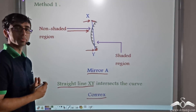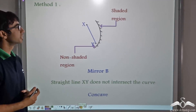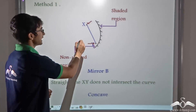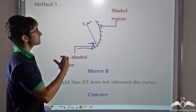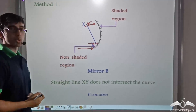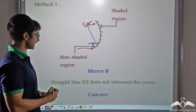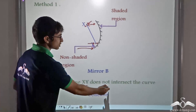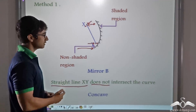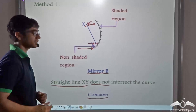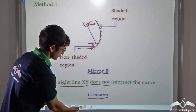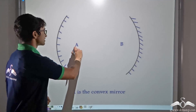Now let us try out the same thing for mirror B. Again in mirror B, we consider two points X and Y on the reflecting side of the mirror — the non-shaded region — taken very close to the mirror. After we join point X with point Y, we find that we get a straight line XY that does not intersect the curved surface of the mirror. Since XY does not intersect the curved surface, mirror B is concave. Thus through this method we conclude that mirror A is a convex mirror.